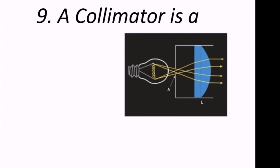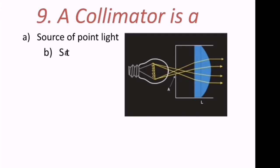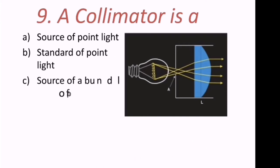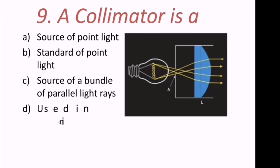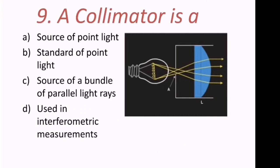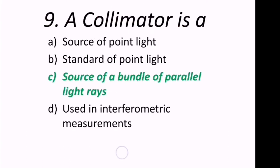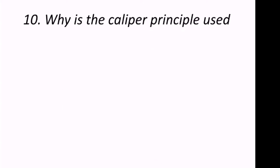Ninth question: A collimator is what? The options are a source of point light, a standard of point light, a source of a bundle of parallel light rays, or used in interferometric measurements. We can see in the figure that a collimator is a source of a bundle of parallel light rays — C is the correct answer.